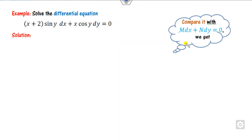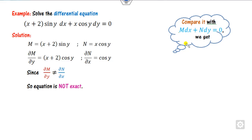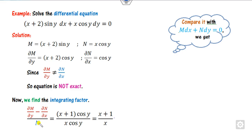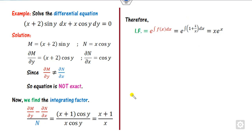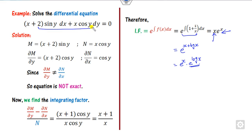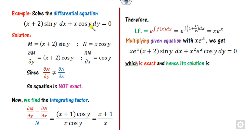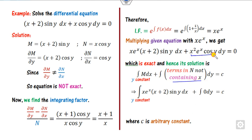For the fourth example, again of M dx plus N dy form — check whether exact, it is not. Starting with the subtraction and dividing by N, this is a function of x only. The integrating factor is x plus log x, which can be written as e raised to power x times log x — that is just x e raised to power x. Multiply the differential equation by x e raised to power x, which is always exact. There are no terms in N not containing x, so that is 0. Keeping y constant, sin y is outside and integrate by parts to get the answer.